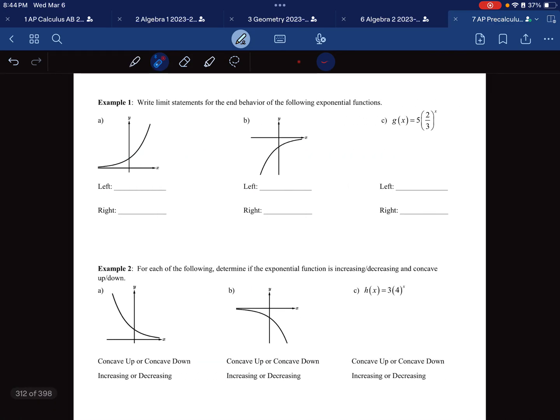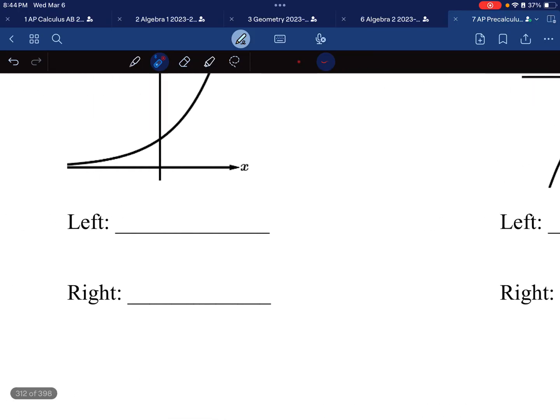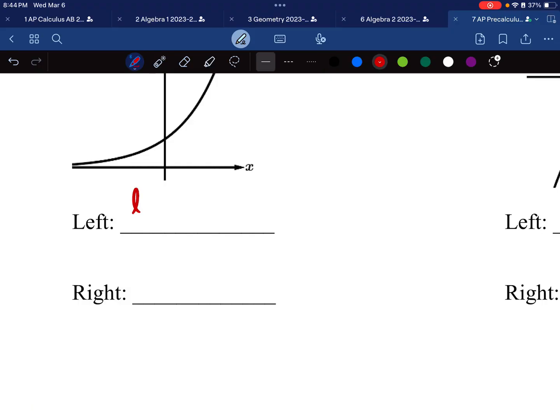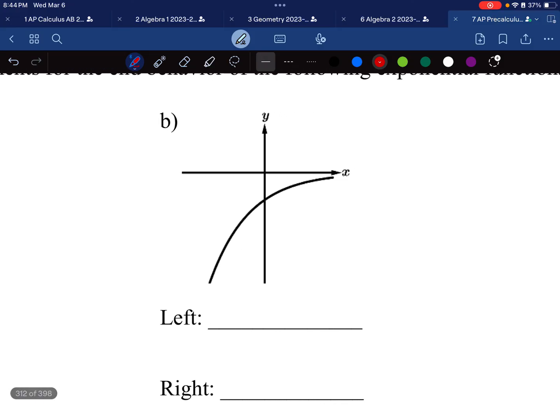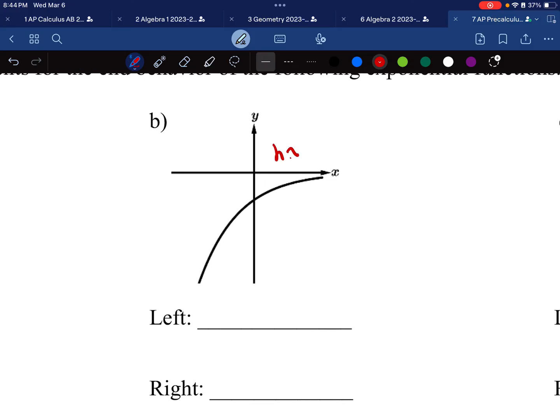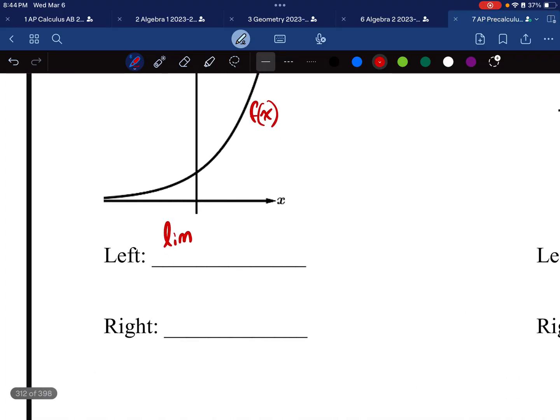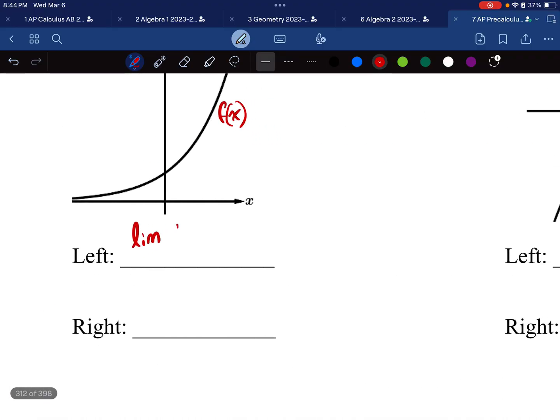All right, so let's do some examples. We want to practice writing the limit statements for these functions. So the left limit is the limit of this function, which I'm going to name f of x. Let's call this one h of x, and this one we can call g of x. So we're going to say that the limit of this function, f of x, I want to go left, so it's x approaches negative infinity. And the right will be the limit of f of x as x approaches positive infinity.